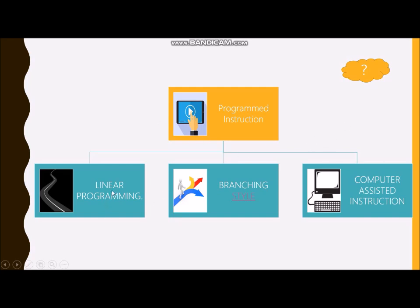The three sub-parts for programmed instructions are: a linear approach, where we go step by step from a start point to an end point and the learning path is complete; a branching style, where the path can go in different directions; and computer-assisted instruction. In this PPT, from here it could go down linear programming, branching programming, or computer-assisted instruction. It's also possible to refer to notes by clicking the question mark.